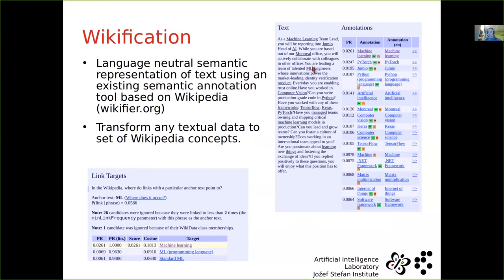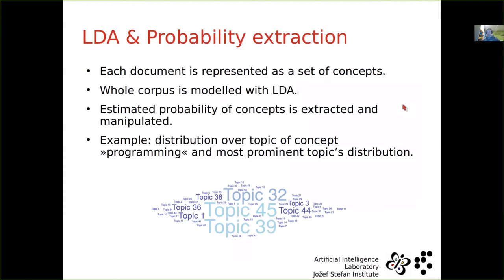So for example, we have here a phrase ML engineers, leading a team of talent ML engineers, which obviously mean machine learning engineers, because this is how our brain works, we know it, and Wikifier actually maps this ML to concept machine learning, to the strongest weight. So this is, Wikifier already enriches our data, and return it in the form of a set of concepts. So after we have a set of concepts, for each document, we can represent a whole corpus and model it with LDA.